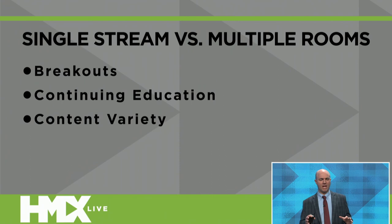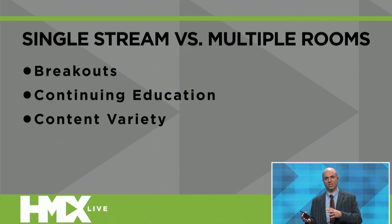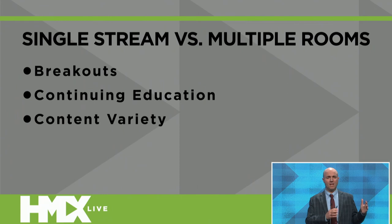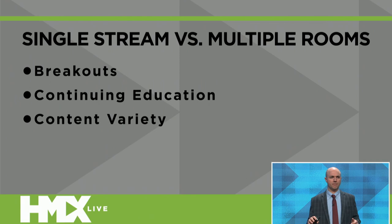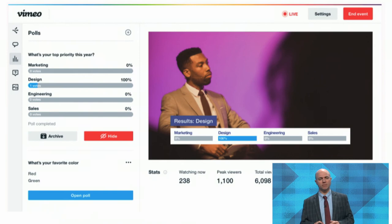That's a single-room example where everybody was on that same stream. Let's talk about if you have multiple places where you want your attendees to go. Maybe you're doing a general session and then you want people to go to breakouts and then back to the general session. Zoom will allow you to have a stream and then break out into rooms and come back. With Pathable, you can have your general session and then pick what breakouts you want to go to and then go back. Maybe you're doing a continuing education conference where your professionals will be watching one stream and your students will be watching another. Or maybe it's on-demand where you have content variety and you're picking which breakout session you want to go to.